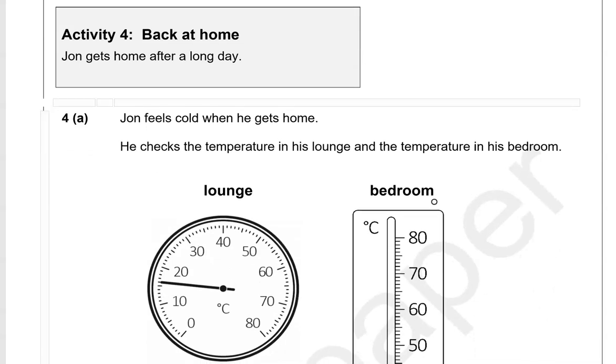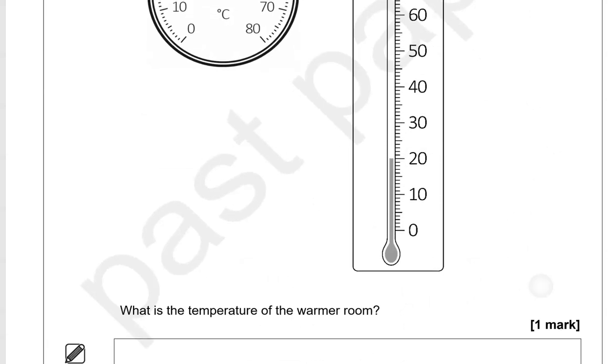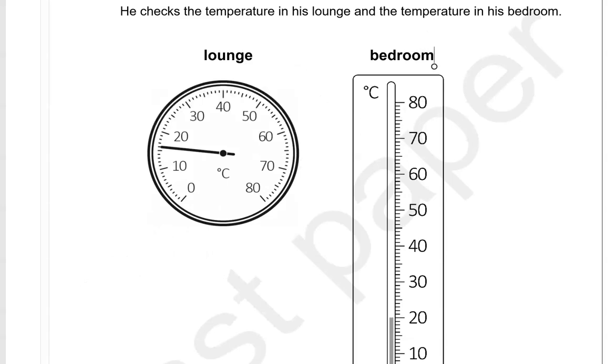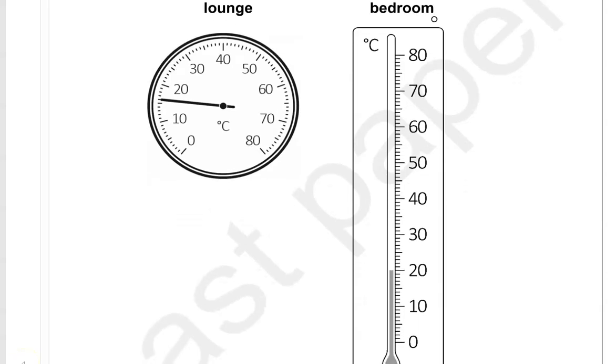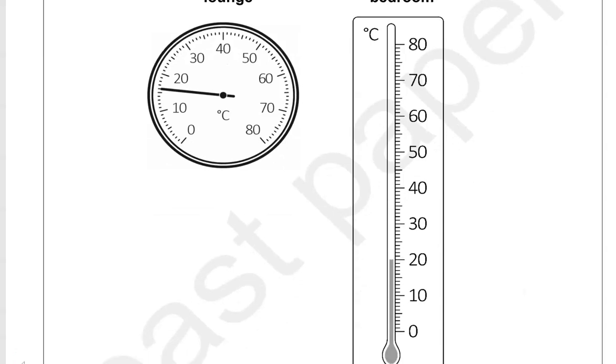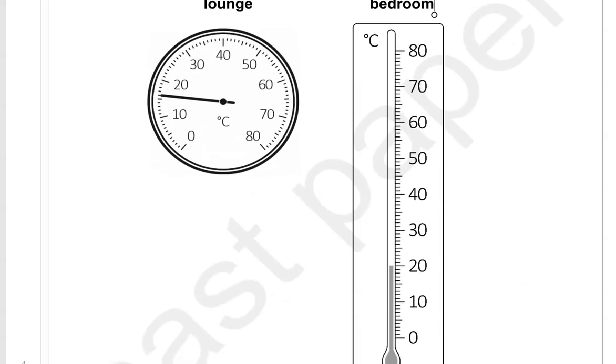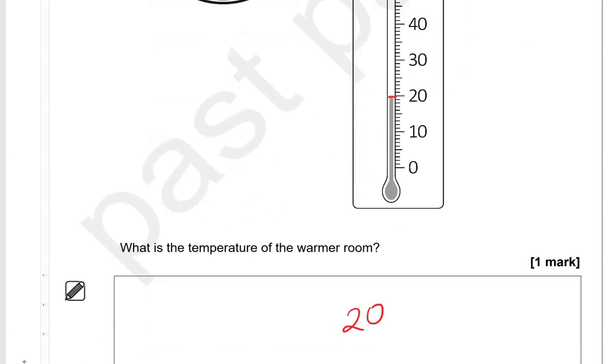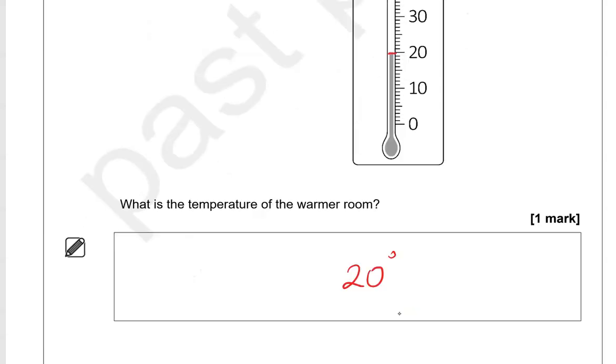Activity 4. Back at home. John gets home after a long day. John feels cold when he gets home. He checks the temperature in his lounge and the temperature in his bedroom. What is the temperature of the warmer room? So which one is warmer? Let's have a look. So we've got the lounge. That is about 15. So between 10 and 20. Whereas the bedroom, that is spot on the 20. So the temperature is 20 degrees. Because that's for the bedroom which is warmer.